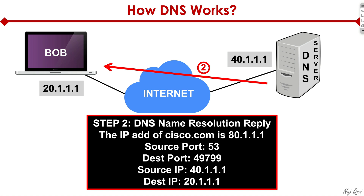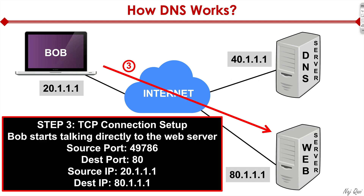The DNS server then responds with a name resolution reply, saying the IP address of cisco.com is 80.1.1.1. The source port is the DNS server's own port, the destination port is the port previously defined by Bob, and the source IP is the DNS server's IP while the destination IP is Bob's. At that point, Bob now knows how to communicate with the cisco.com web server at 80.1.1.1 and starts talking directly to it — it no longer needs to contact the DNS server, because DNS gave it what it needed.